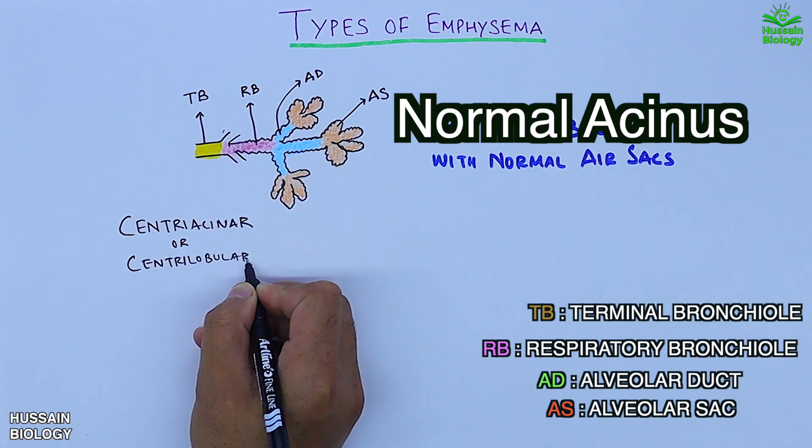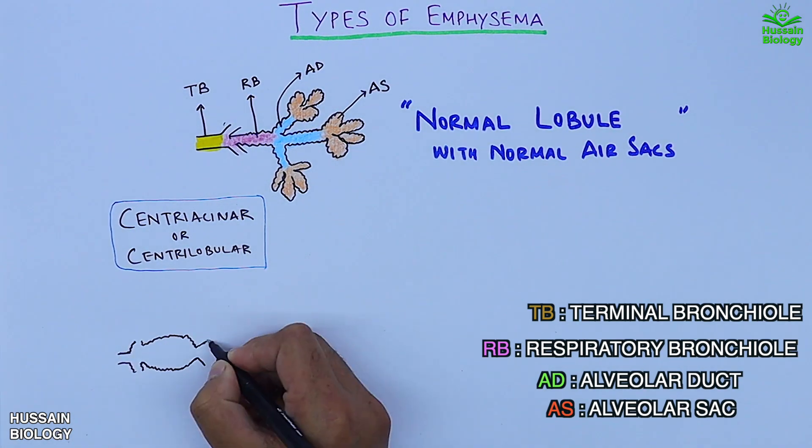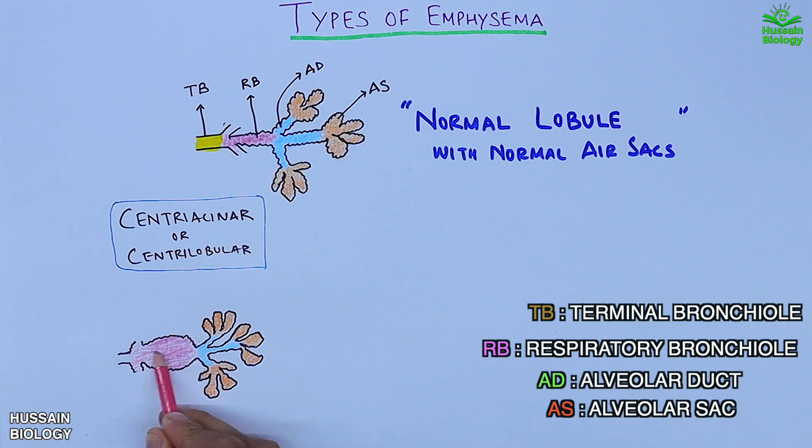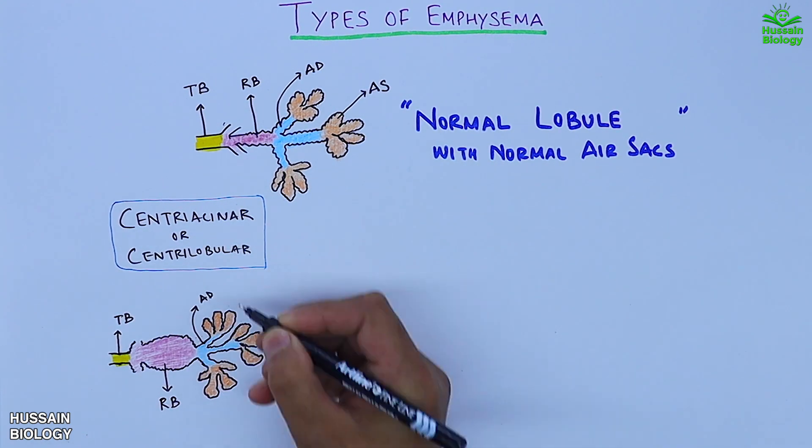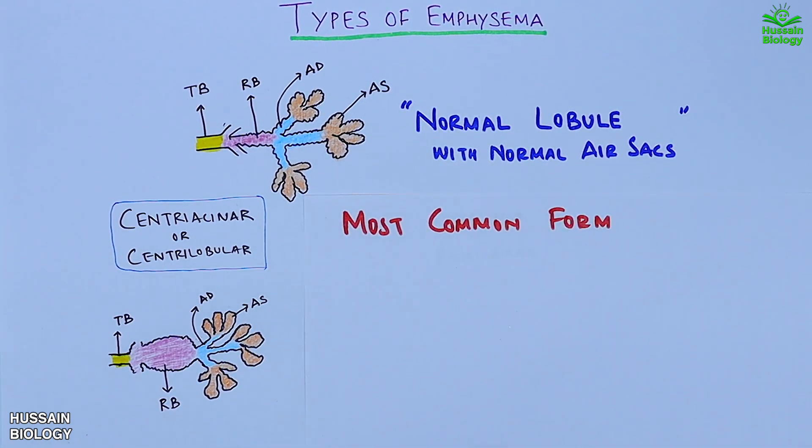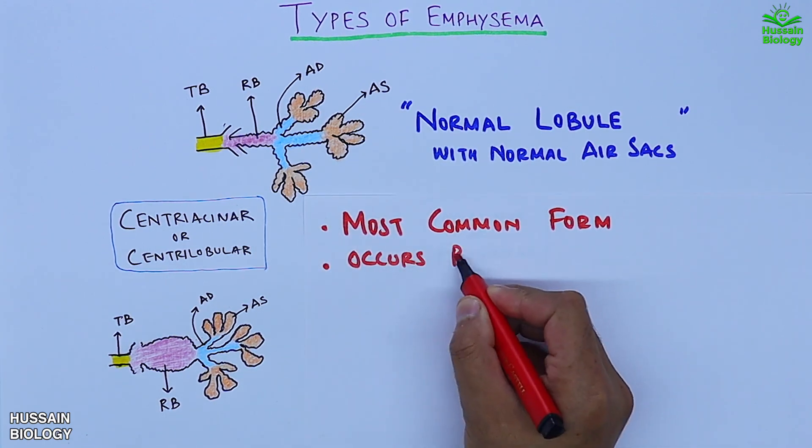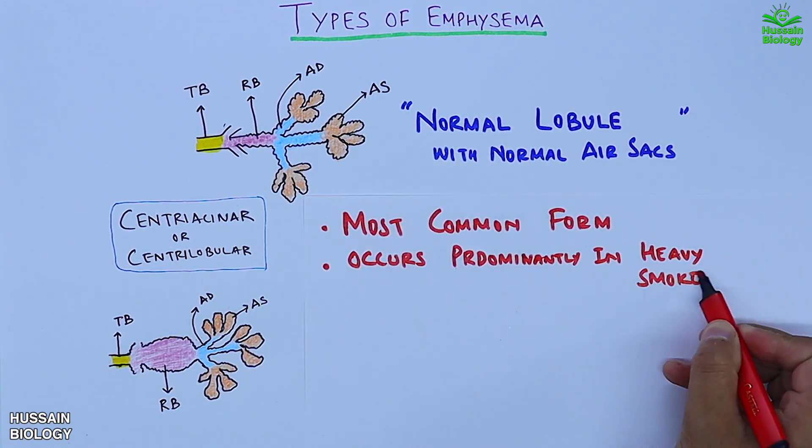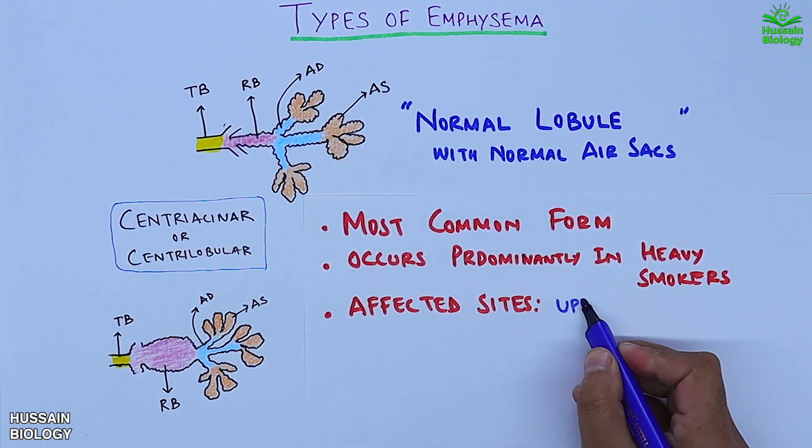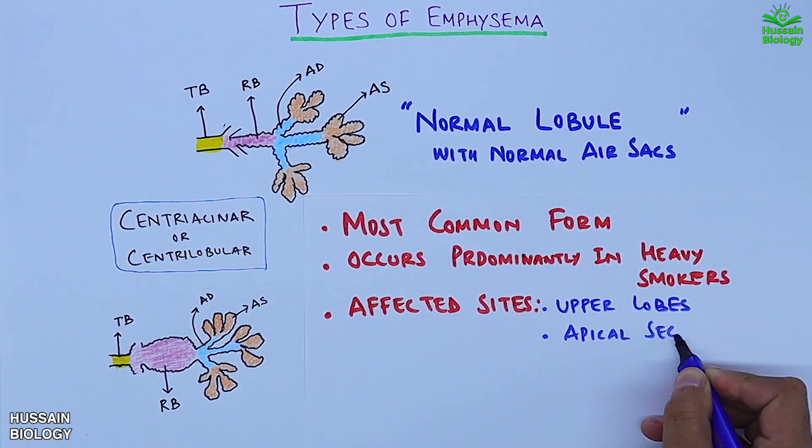The first type is centriachinar or centrilobular. As shown in the diagram, it has an enlarged respiratory bronchiole. This type is the most common form of amphysema, occurs predominantly in heavy smokers, and the affected sites in the lung are upper lobes and apical segments.